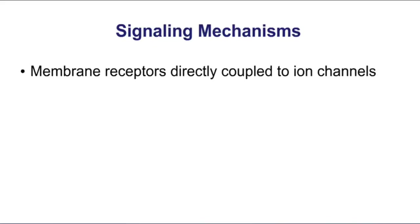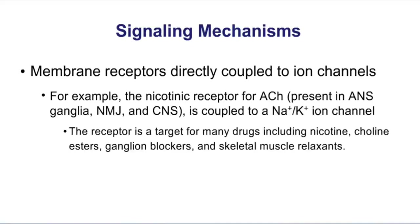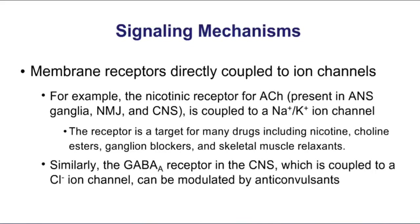Some examples of ion channel-coupled receptors: nicotinic receptors. When acetylcholine stimulates a nicotinic receptor, you're going to see the opening of a sodium and potassium channel, where sodium goes into the cell and potassium exits the cell. Another example would be GABA-A receptors. When you stimulate those GABA-A receptors, they're directly coupled to chloride channels, and a number of drugs can modulate that activity.